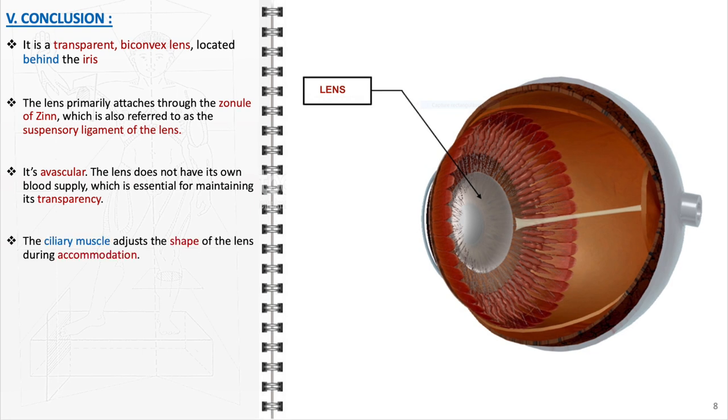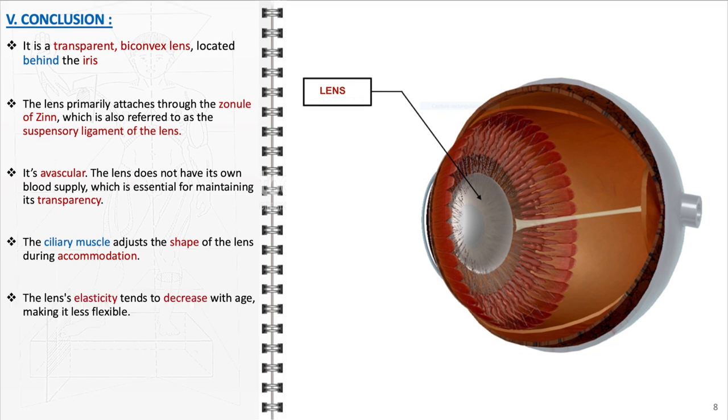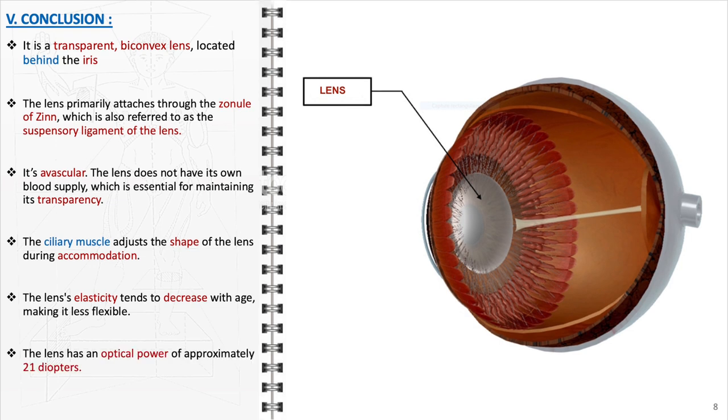The ciliary muscle adjusts the shape of the lens during accommodation. As a person ages, the lens's elasticity tends to decrease, making it less flexible. This loss of flexibility impairs the lens's ability to change shape, a condition known as presbyopia, which commonly leads to difficulty in focusing on close objects in older adults. The lens has an optical power of approximately 21 diopters. This measure indicates its ability to bend light rays, which is a crucial aspect of focusing images on the retina for clear vision.